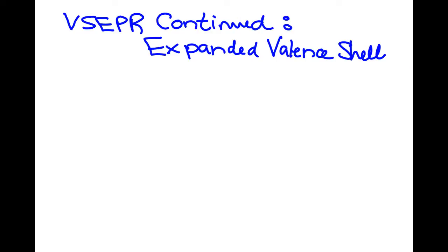This lesson is a continuation on my last VSEPR lesson, and this one is to do an example of a compound that has an expanded valence shell. We're going to use the example PCl5 for this.